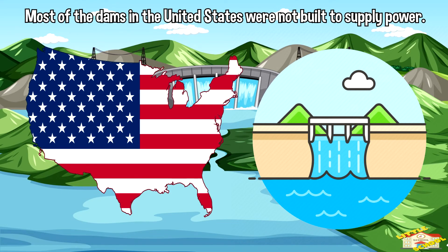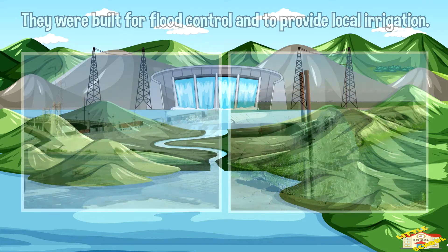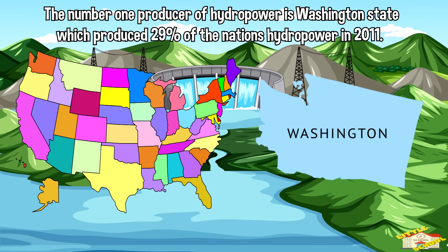Most of the dams in the United States were not built to supply power — they were built for flood control and to provide local irrigation. A large portion of the hydropower generated in the United States occurs in the western states. The number one producer of hydropower is Washington State, which produced 29% of the nation's hydropower.